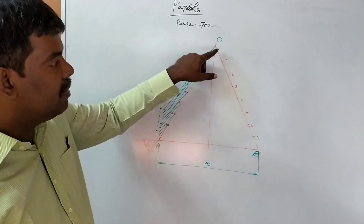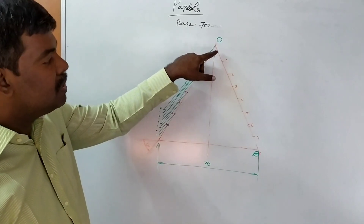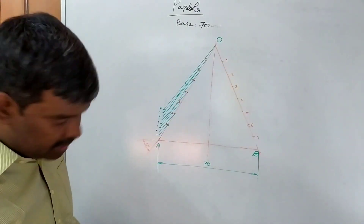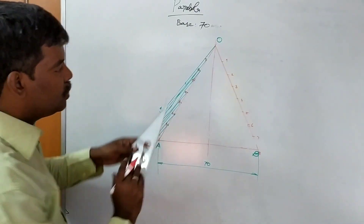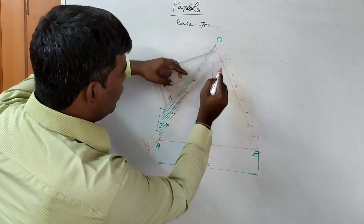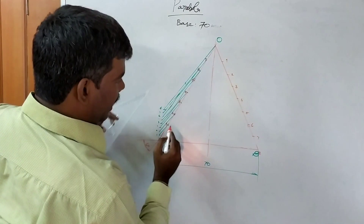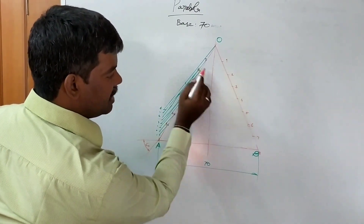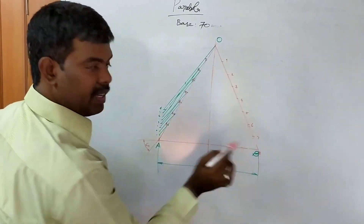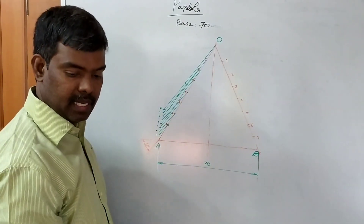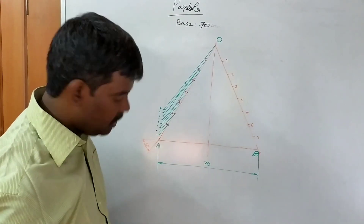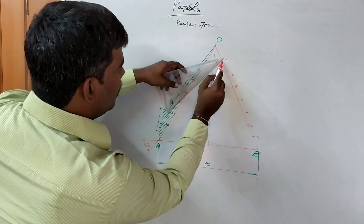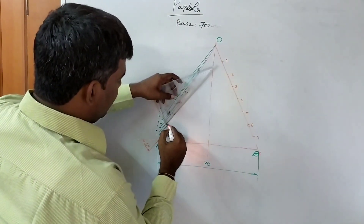From the base, point 1 corresponds to apex point 1. After that, you join 1 and 1, 2 and 2, 3 and 3, 4, 5, 6, and 7 on the opposite side. Join all corresponding numbered points from both sides of the triangle.